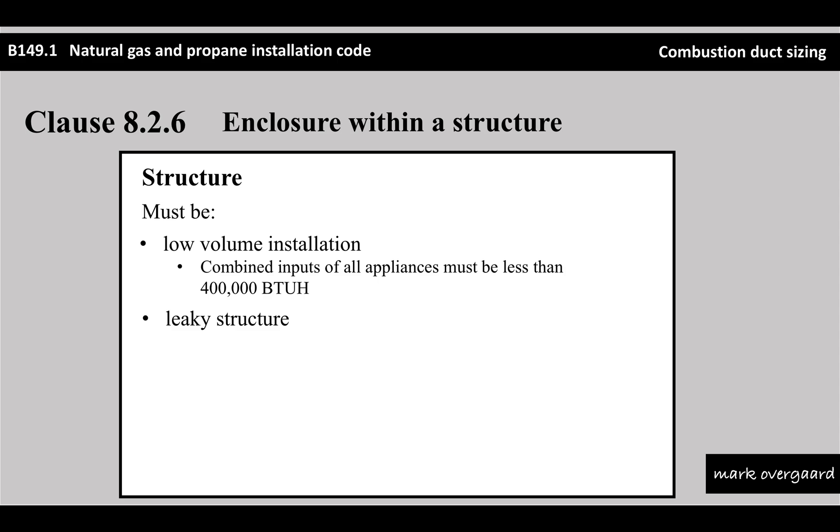The second thing is it has to be a leaky structure, which means it doesn't comply with Clause 8.2.1 A or B from the codebook. It's not airtight - air can come from outside the structure into the structure. Another part of this is that the volume of the structure is able to handle any air requirements, meaning the structure is leaky enough that enough air can get in to feed those appliances what they need to work.